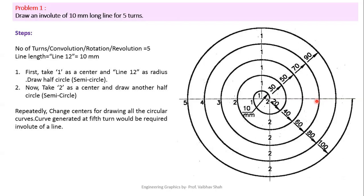Now change the center to point 1. With radius from point 1 to the end of the third curve, draw one more arc ending at point number 4 — this arc has turned through 180 degrees. Then change the center to point 2 with radius 2 to 4 and draw another arc. This completes a total of 4 turns.